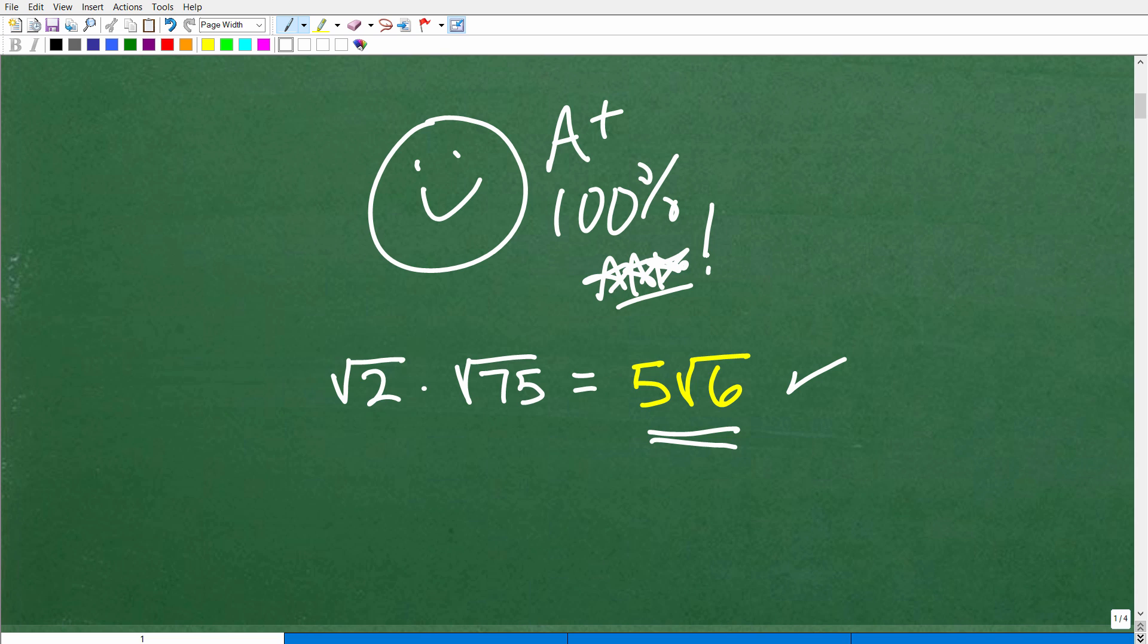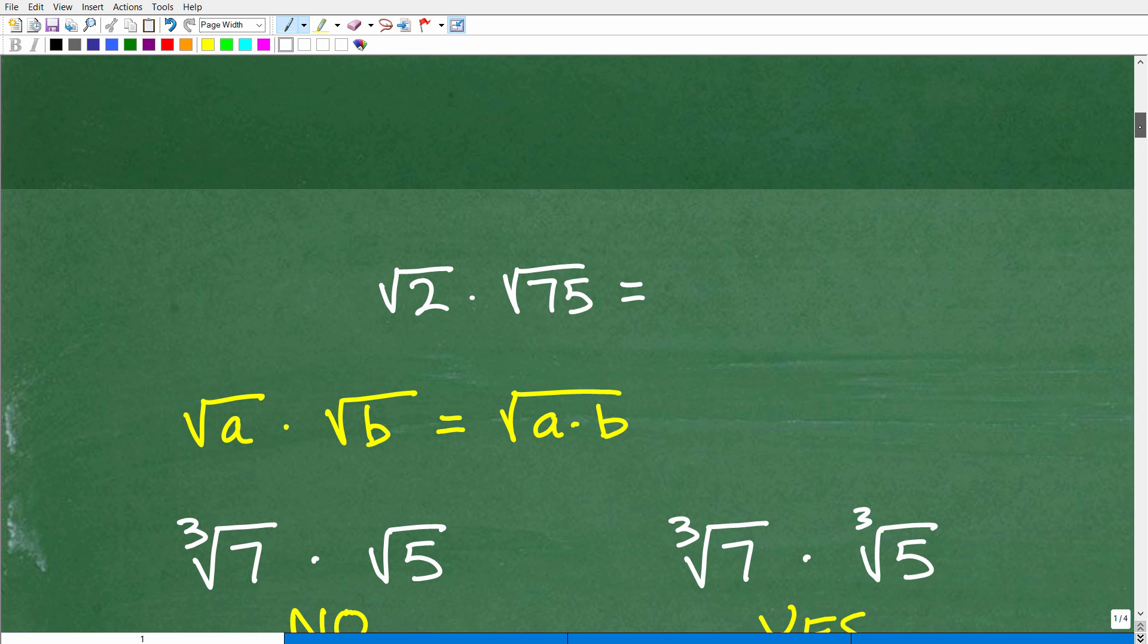Nice job. Okay, all right. So not that difficult of a problem. But let's go ahead and get into why the square root of 2 times the square root of 75 is equal to this. And again, the topic here is multiplying square roots or multiplying radicals.